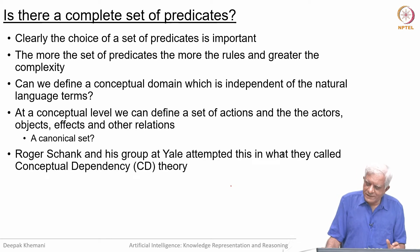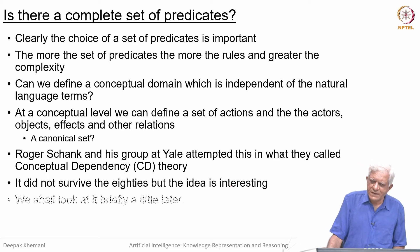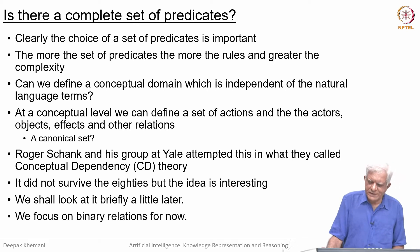Such an attempt was made in the late 70s at Yale University by Roger Schank and his group. They attempted to define what they called conceptual dependency theory—a set of concepts distilled from the way we talk about the world in natural language. They had a very small set of concepts. Their work fizzled out in the mid-80s after other fads emerged in AI, such as case-based reasoning and neural networks. We will look at conceptual dependency later because the idea is worth pursuing. For the moment, we talk about binary relations.